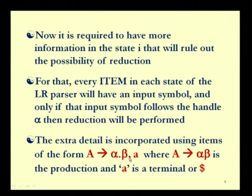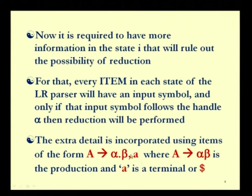An LR(1) item is of the form [A → α•β, a], where A → α•β is the LR(0) item form and small a is the lookahead symbol. For every item in each state of the LR parser, we have an input symbol, and only if that input symbol follows the handle α going for reduction does it matter. The lookahead can be a terminal or the dollar symbol, which denotes the end of the string.